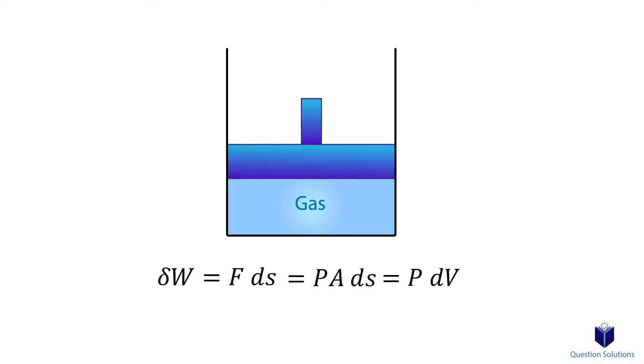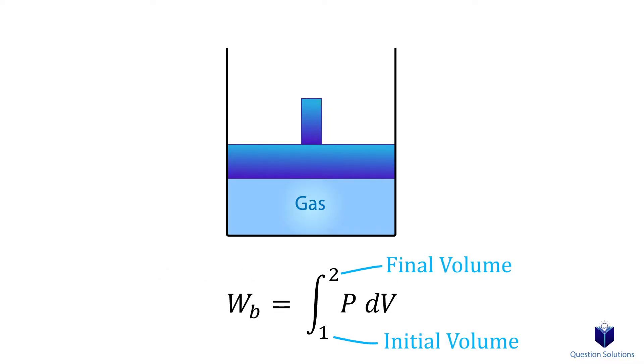Now we obviously can't just think about tiny amounts of work. We need the full picture. So we definitely need to integrate. In other words, add up all those tiny amounts of differential works together. So we can write our equation like this. The boundaries of the integral are the initial and final volume values. The units will be kilojoules.